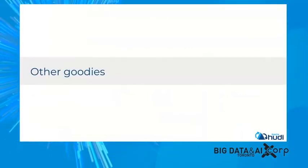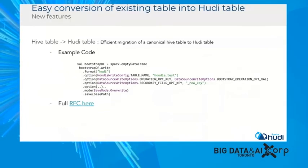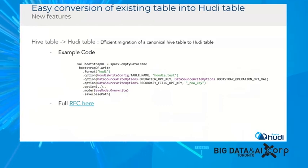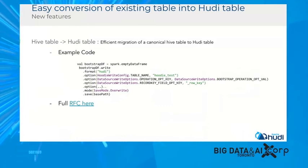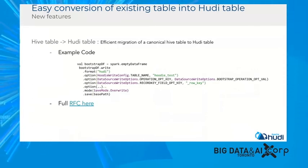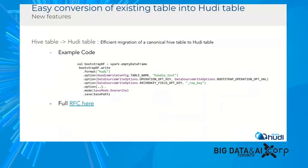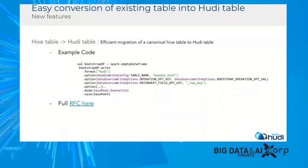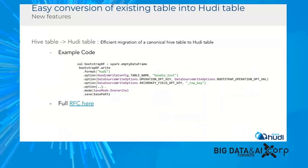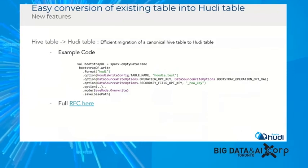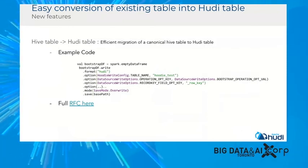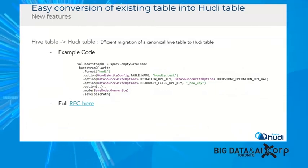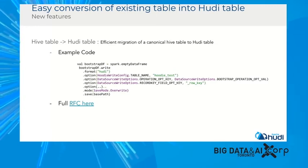Another useful feature is easy conversion of an existing table into a Hudi table — useful for those who've already built data lakes but want all of Hudi's functionality. In the last six months, we've worked on a bootstrap feature. You start a Spark DataFrame, write it in Hudi format, give your source table name, set the operation as bootstrap, and provide the output path. In the background, Hudi scans the table, develops all needed metadata, and does not rewrite the data — the data stays as-is in its existing file format, as long as it's supported by Hudi. It creates a metadata skeleton over your actual data, and you gain access to all Hudi features. There's a full RFC in the open source community for more details.